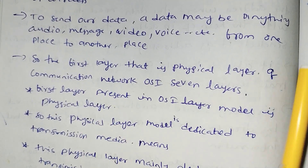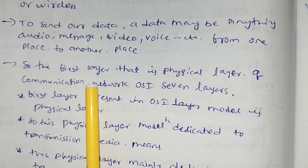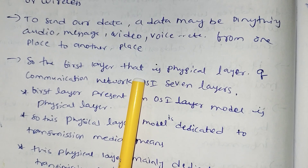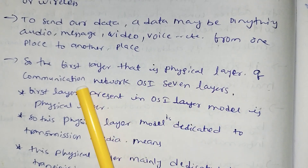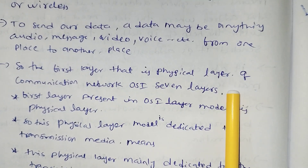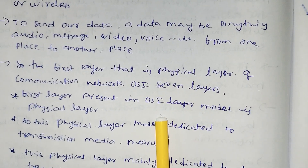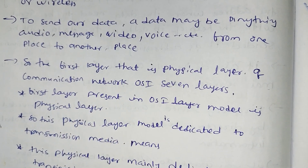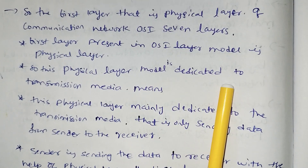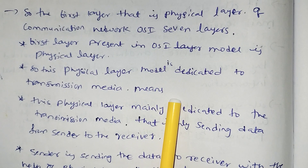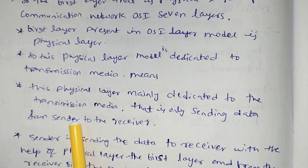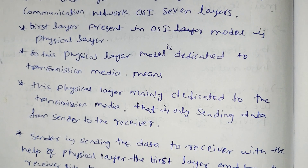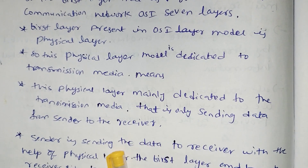The first layer in the OSI communication network model is the physical layer. OSI has 7 layers, and the first layer is the physical layer. This physical layer is dedicated to transmission media — that is, only sending data from sender to receiver. The physical layer handles the bits of data.